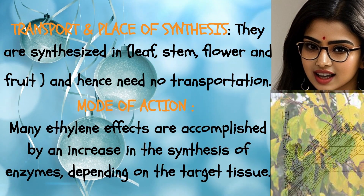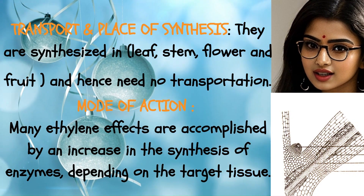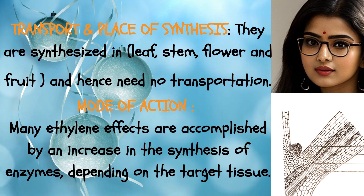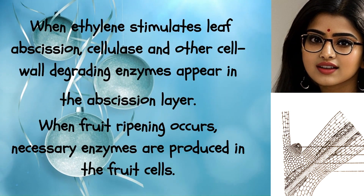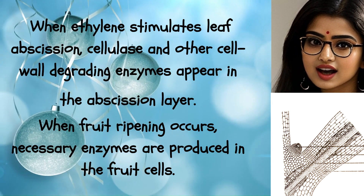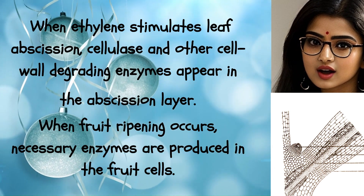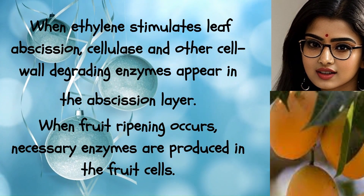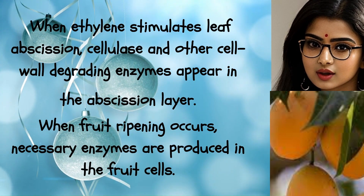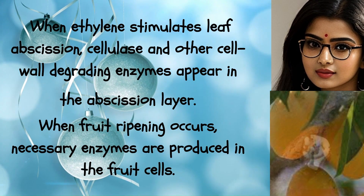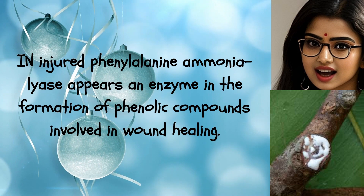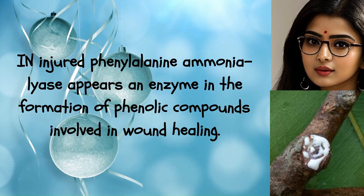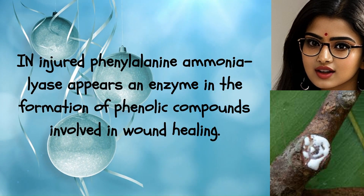Mode of Action: Many ethylene effects are accomplished by an increase in the synthesis of specific enzymes, depending on the target tissue. When ethylene stimulates leaf abscission, cellulase and other cell wall-degrading enzymes appear in the abscission layer. When fruit ripening occurs, necessary enzymes are produced in the fruit cells. In injured cells, phenylalanine ammonia lyase appears, an enzyme involved in the formation of phenolic compounds for wound healing.